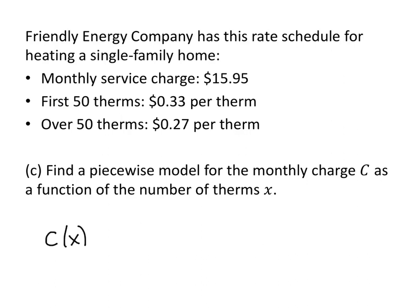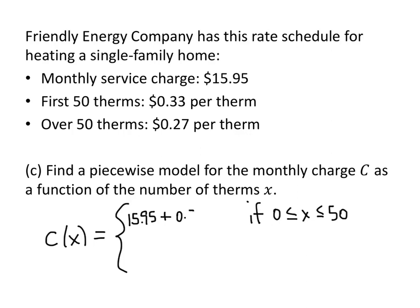Here's the idea. Our cost as a function of x — the number of therms we use — is going to depend on how big x is. The first case is if x is between 0 and 50, because then we don't have to worry about the secondary charge or the 27 cents. We're going to pay $15.95 plus $0.33 per therm — however many therms we use, we multiply that by 33 cents, and that's how much our heat costs.